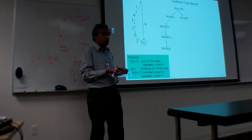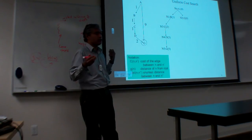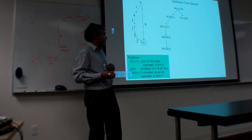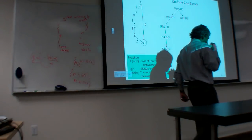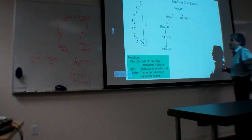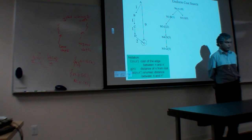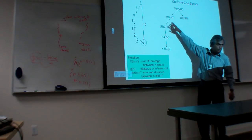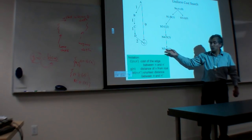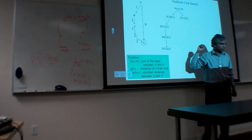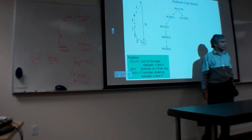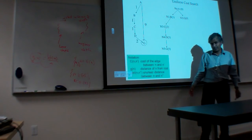Did you get the optimal solution in this example? Of course you did. A question you might ask is: will we always get an optimal solution? The answer is yes. Because the worry is — suppose this approach found you a path to the goal — you're wondering, is this the optimal path? Can I prove it's optimal? Let's look at that on the board.